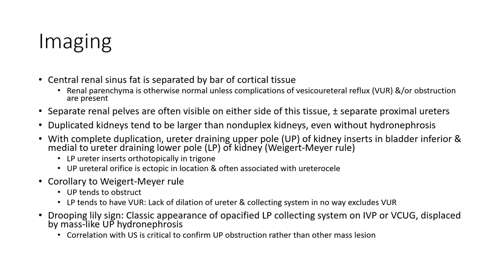Imaging: the central renal sinus fat is separated by a bar of cortical tissue. Renal parenchyma is otherwise normal unless complicated by vesicoureteral reflux and/or obstruction. Separated renal pelves are often visible on either side of this tissue, plus or minus separate proximal ureters. The duplicated kidney tends to be larger than the non-duplicated kidney, even without hydronephrosis.